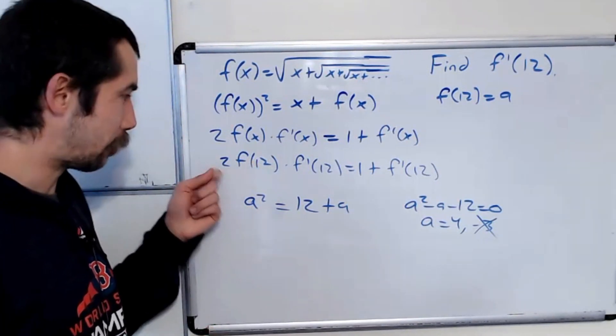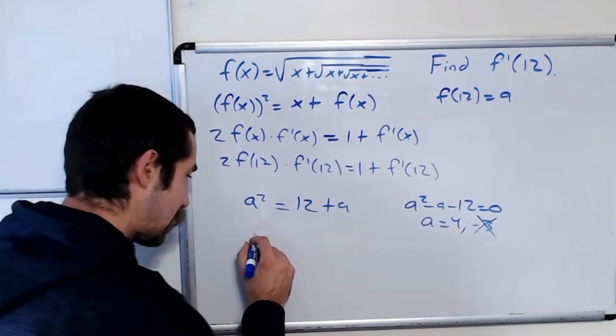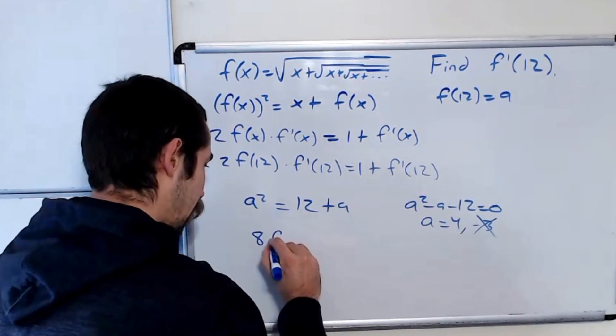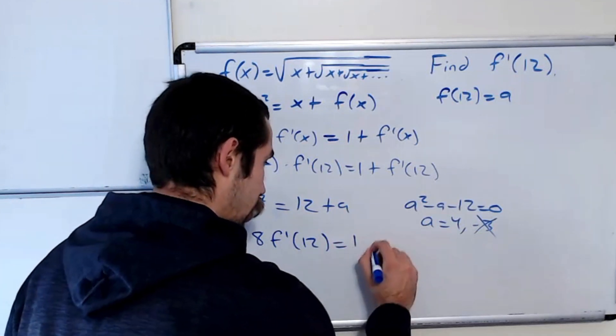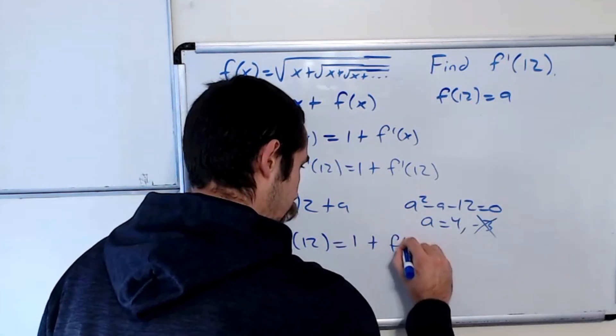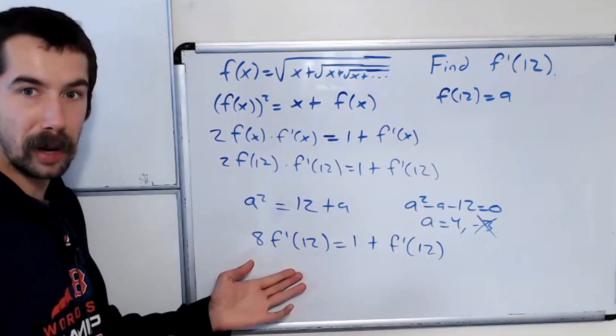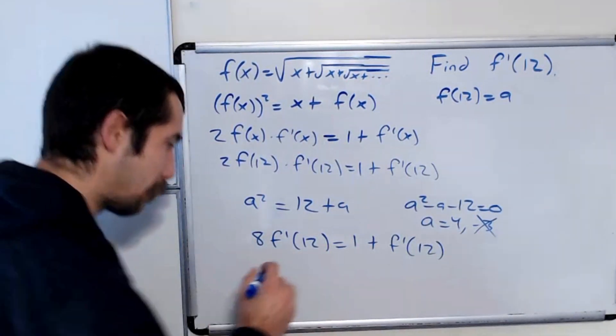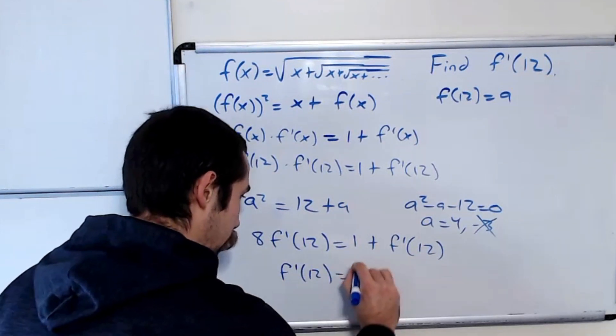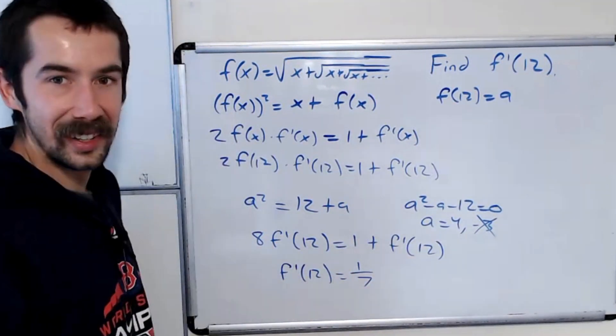So subbing into this equation, we have 2 times 4, which is 8 times f prime of 12 is equal to 1 plus f prime of 12. Bringing this f prime of 12 over and then dividing by the 7, we have our answer f prime of 12 is equal to 1 seventh.